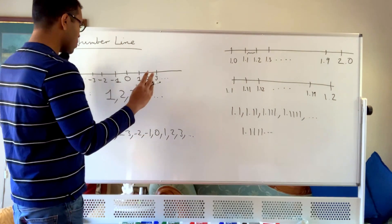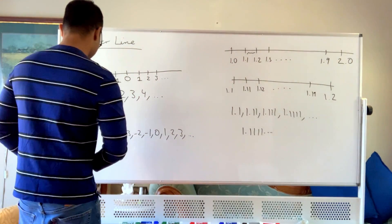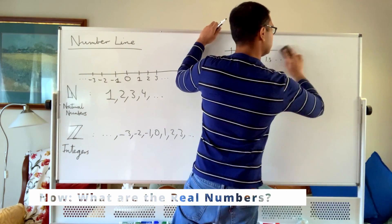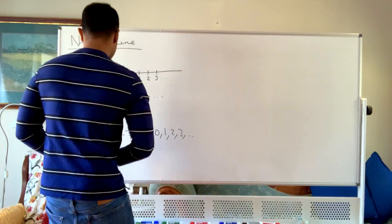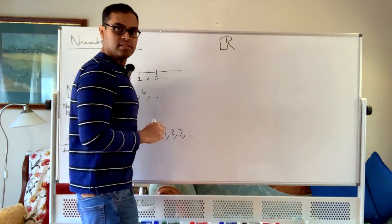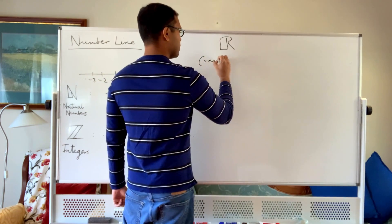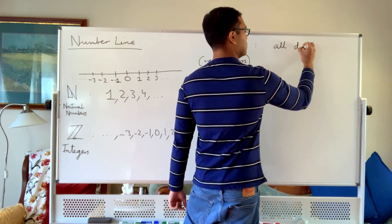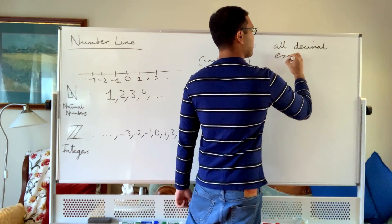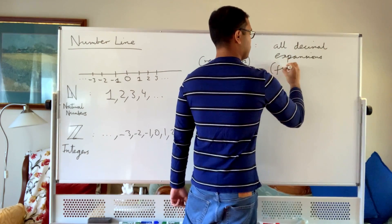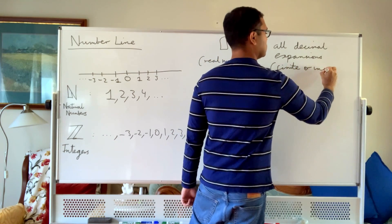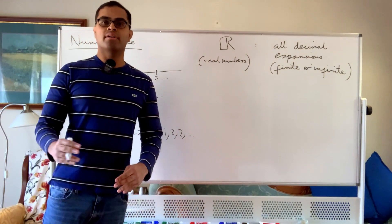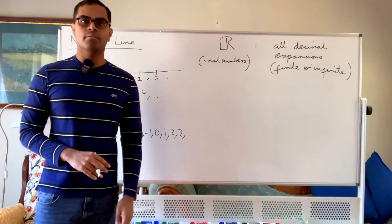To include all these numbers is important — this is like filling in the holes. And this gives us what are called the real numbers, denoted by ℝ. The real numbers are, in one way of describing them, all decimal expansions — finite or infinite. So pi is a real number, 1.567892 is a real number, square root of 2 is a real number, and fractions are real numbers.